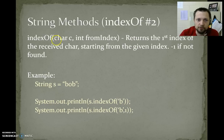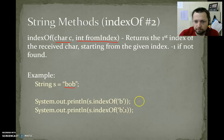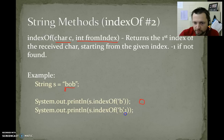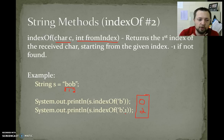indexOf overload — you send a character and where you want to start looking from. Returns the first index of the received letter starting from the given index, minus 1 if not found. So we have "Bob". s.indexOf('b') starting at the beginning finds b at 0. s.indexOf('b', 1) — we start at 1, is that a b? No. Is 2 a b? Yes. So if we start at location 1, we find a b at position 2. Looks like I'm out of time — we'll do a smaller cleanup video.